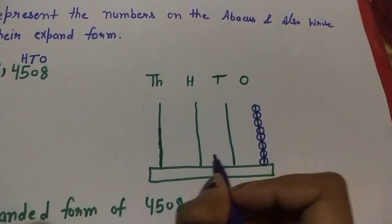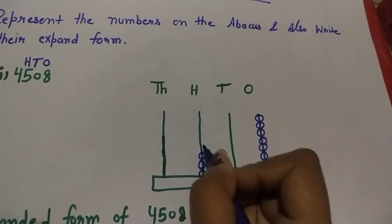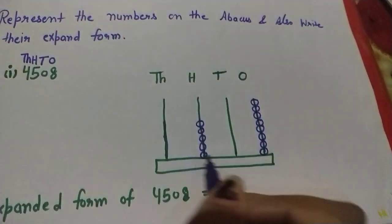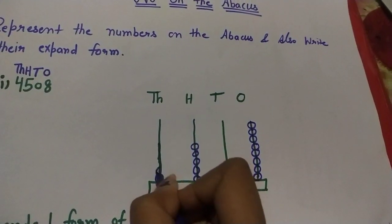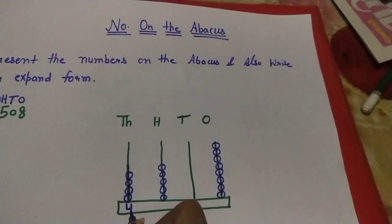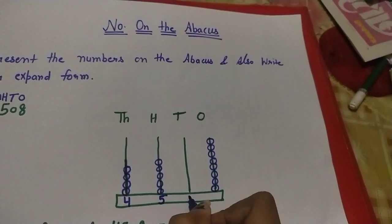So four in thousand place. So in thousand place we have to draw 4 beads: 1, 2, 3, 4. So four beads in thousand place, five beads in hundred place, zero beads in tens place, and eight beads in ones place.